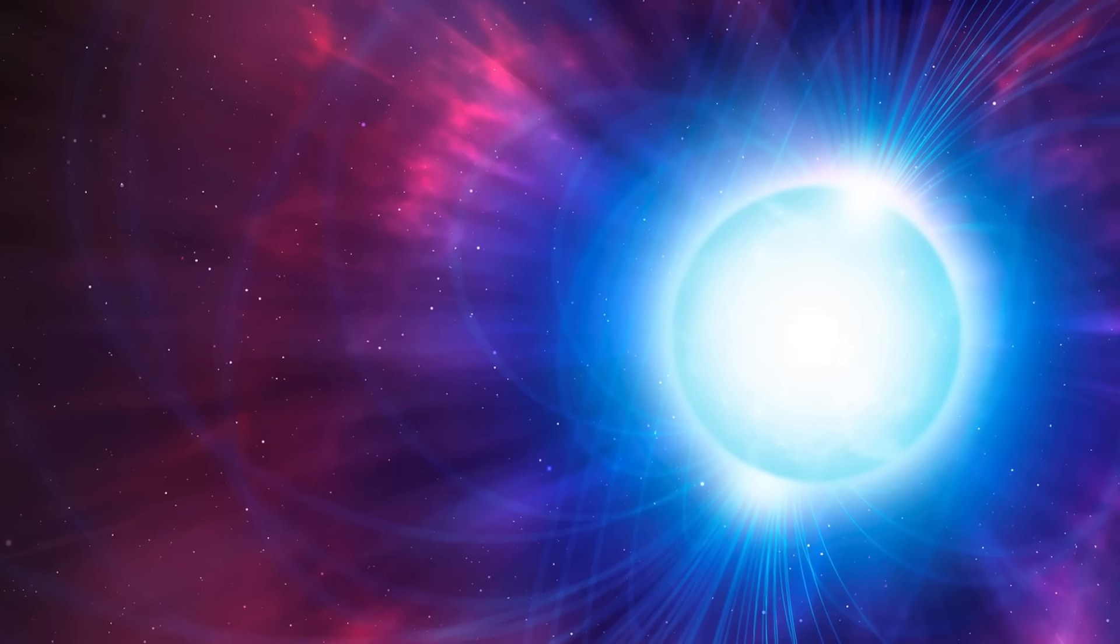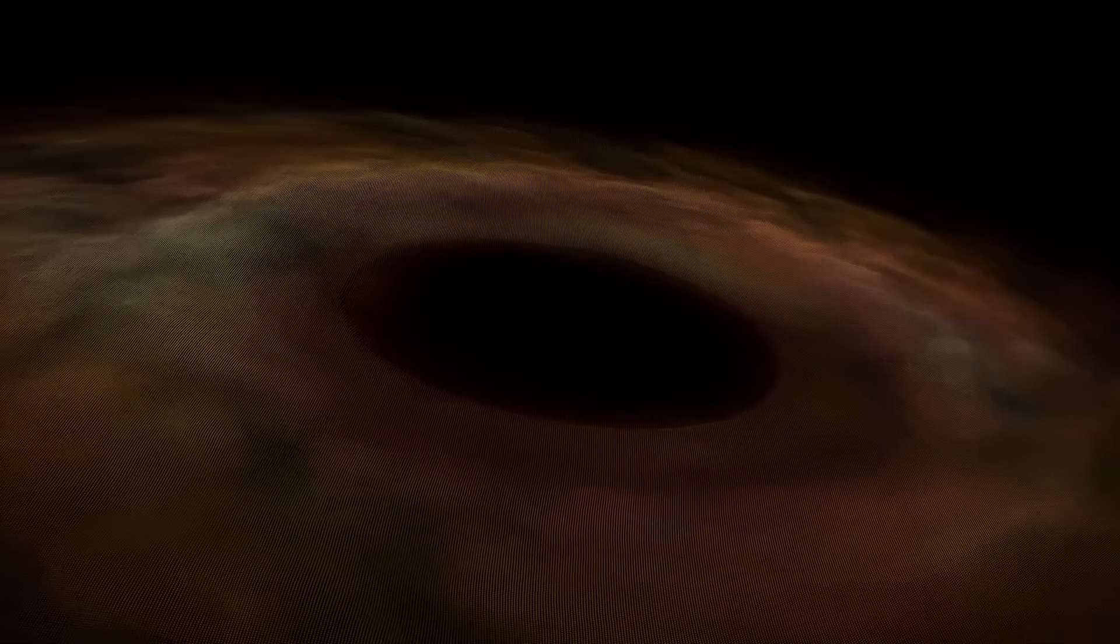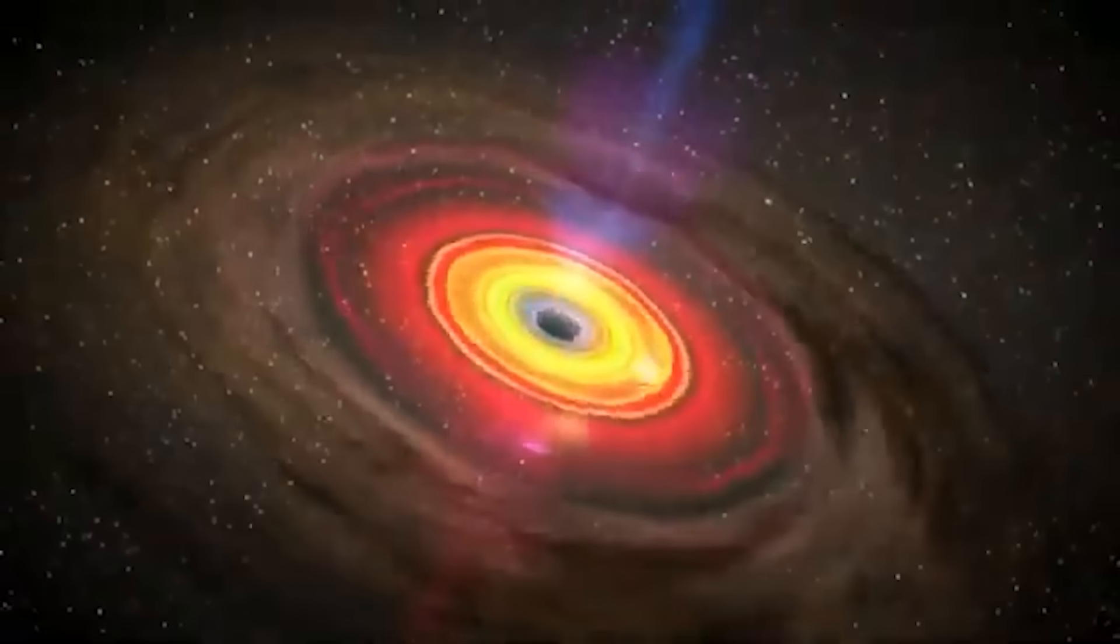These erratic emissions suggest the formation of either a rapidly rotating neutron star or, more unsettlingly, the birth of a black hole. If Polaris has indeed collapsed into a black hole, that changes everything.